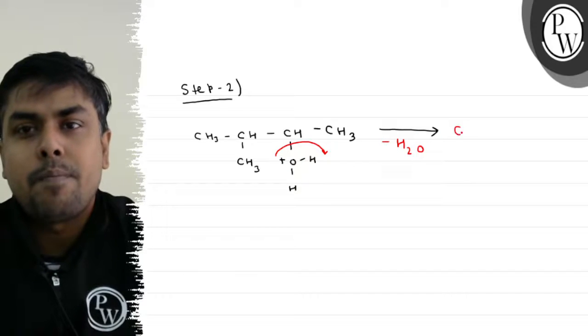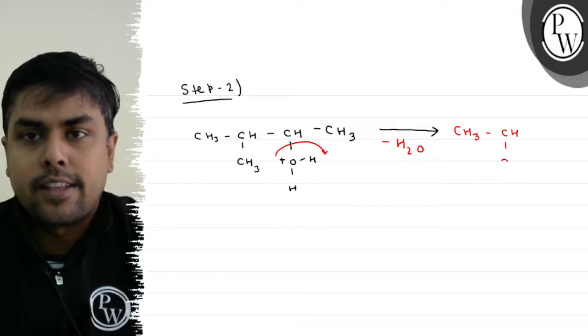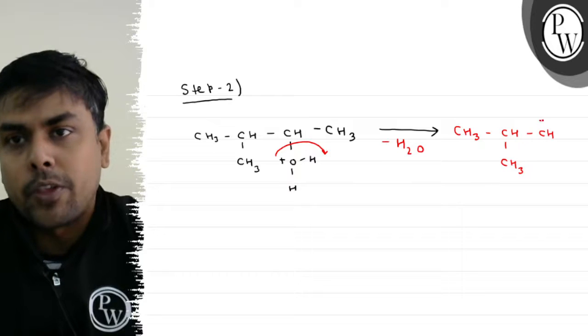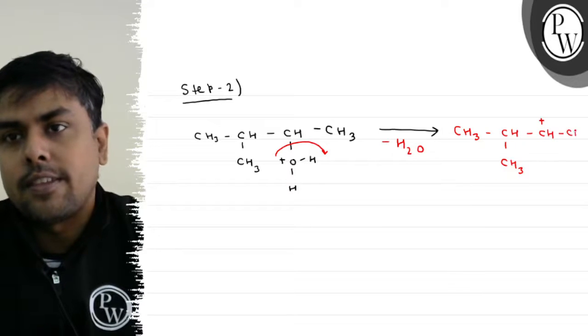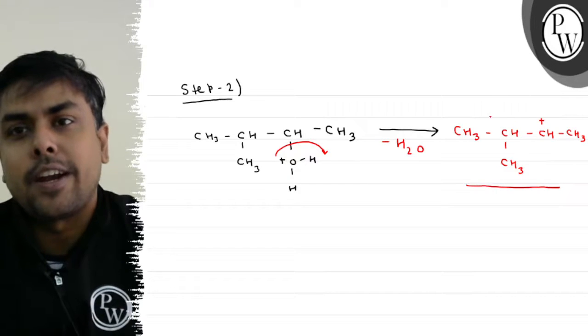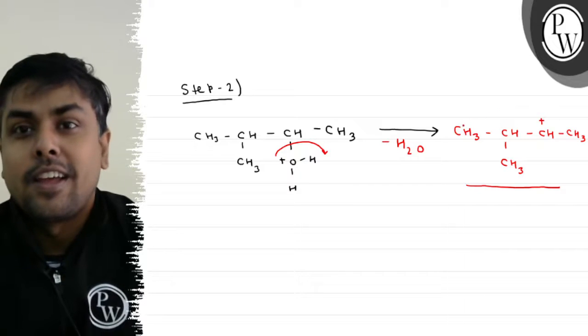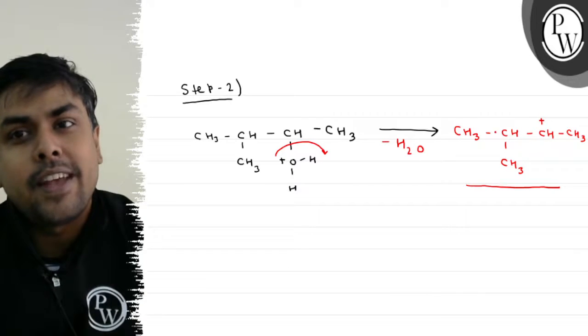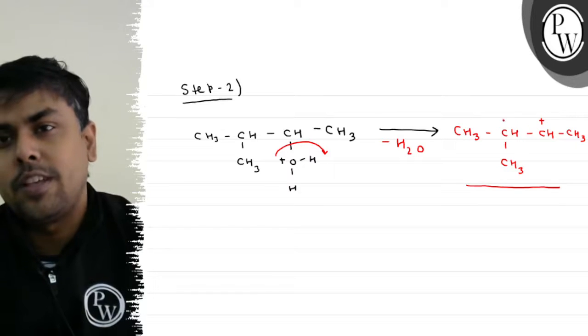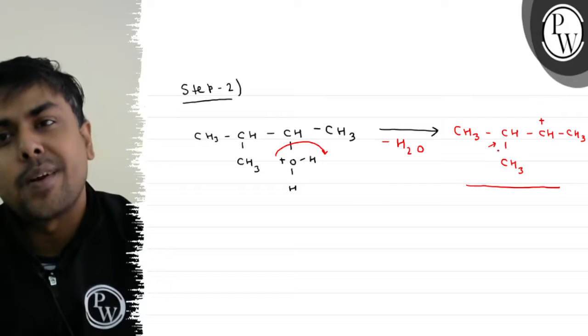I will have an intermediate - a 3-degree (tertiary) carbocation, which is more stable. Let's do Step 3.